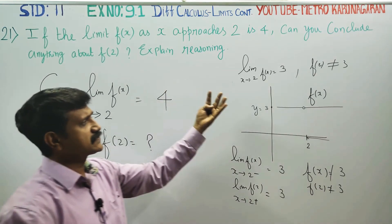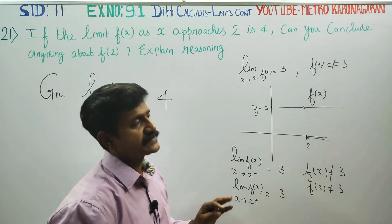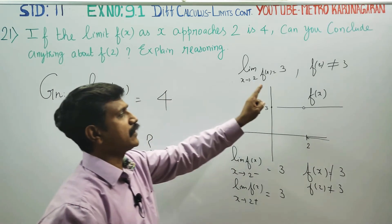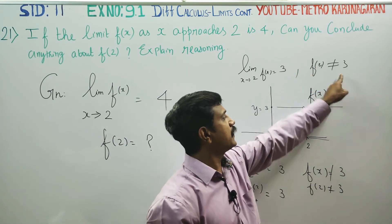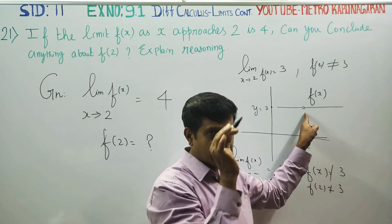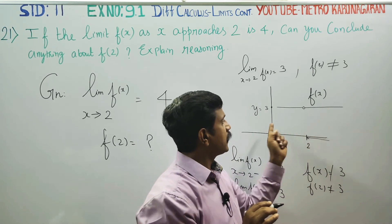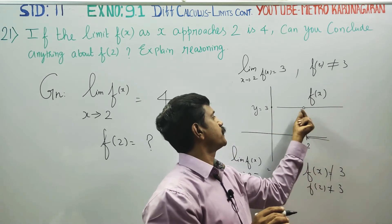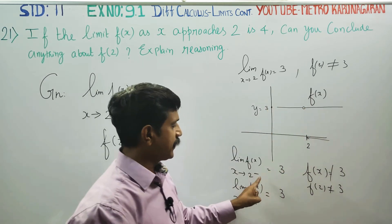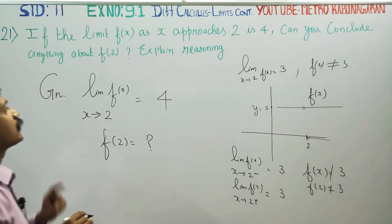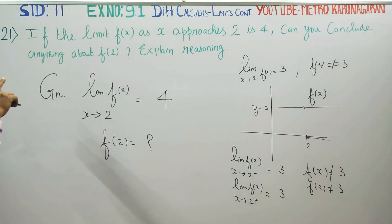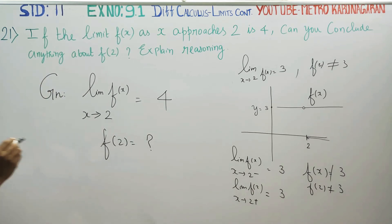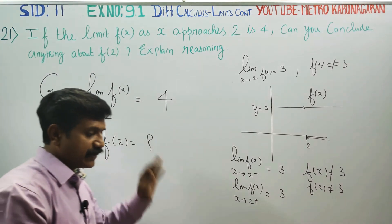The limits and the function values are not always equal. Sometimes they are not equal. In this example, f(2) is not equal to 3 — there is a hole in the graph at that value. From the left side or the right side you are getting a height of 3, but f(2) is not equal to 3. So you cannot conclude anything definite about f(2) from the limit alone, because function values are not always equal to limiting values.